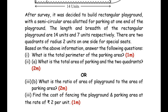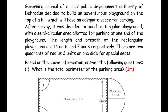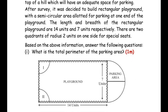The governing council of a local public development authority of Dehradun decided to build an adventurous playground on the top of a hill with adequate space for parking. After a survey, it was decided to build a rectangular playground with a semicircular area allotted for parking at one end. The length and breadth of the rectangular playground are 14 units and 7 units respectively, and there are two quadrants of radius 2 units on one side for special seats. Answer the following questions. The first question is: what is the total perimeter of the parking area?